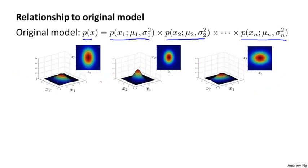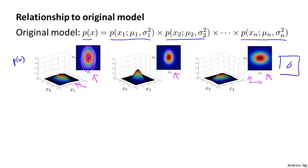In particular, this special case is defined by constraining the multivariate Gaussian distribution so that the contours of the probability density function are axis aligned. You can get a p of x with contours that look like this, or like this, or like this — and notice that all three examples have their ellipses with axes aligned to the x1, x2 axes. What we do not have are contours at an angle, which would correspond to sigma having non-zero off-diagonal elements, such as sigma equal to [[1, 0.8], [0.8, 1]].